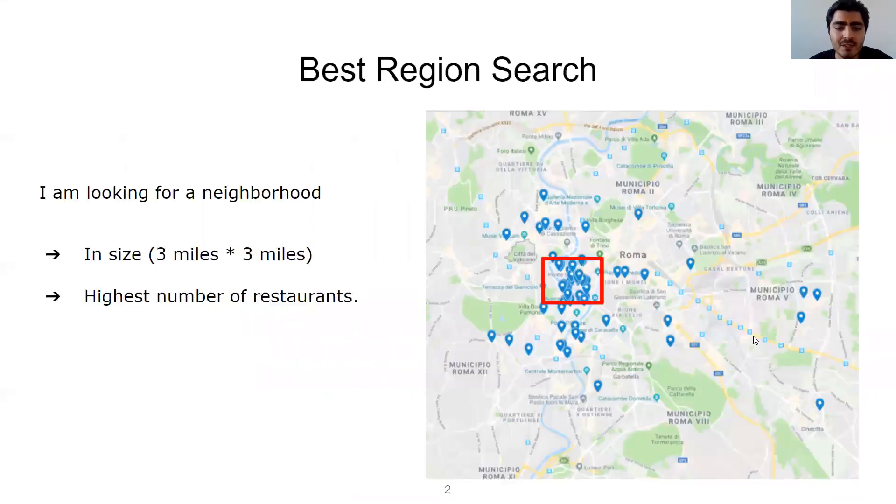First, I explain the best region search problem with an example. Assume that you want to take a trip to Rome and you are searching for a neighborhood in size of 3 miles times 3 miles that contains the highest number of restaurants. Here on the map, you see the rectangle we are searching for that contains the highest number of restaurants inside it.